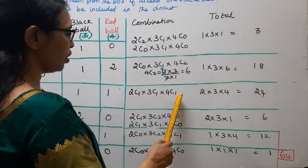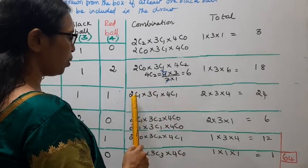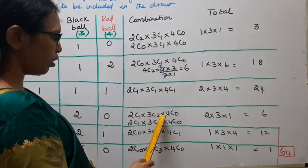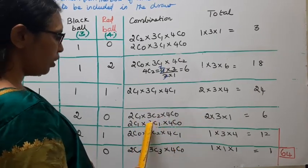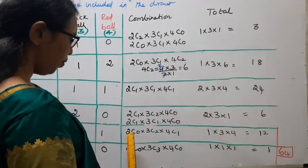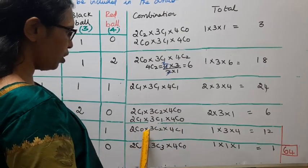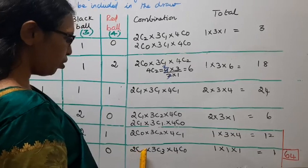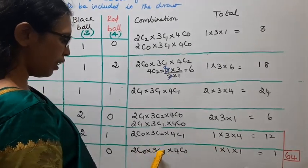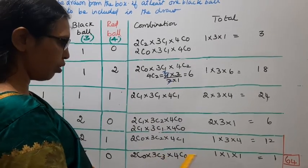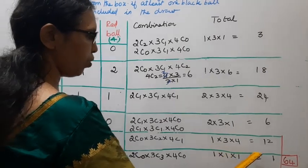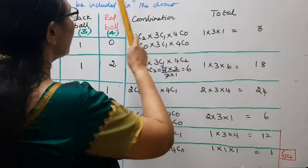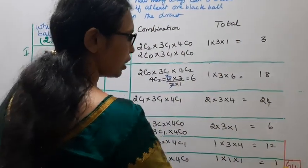2C1×3C2×4C0 equals 6, 2C0×3C2×4C1 equals 12, and 2C0×3C3×4C0 equals 1. Adding all together: 3+18+24+6+12+1 equals 64. So the answer is 64 ways.